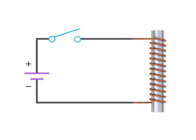To demonstrate the properties of an inductor, we'll add a resistance, or light bulb, to this circuit.